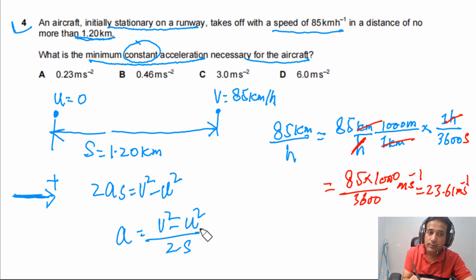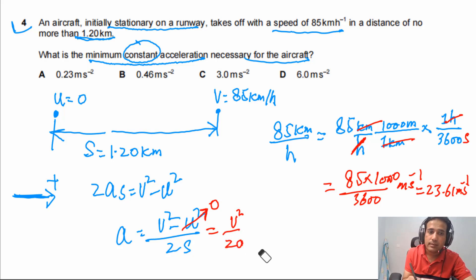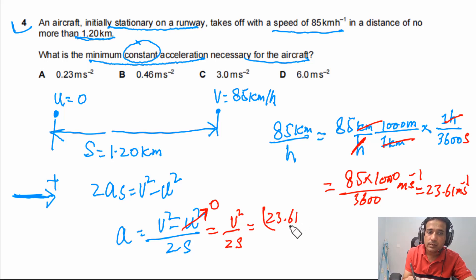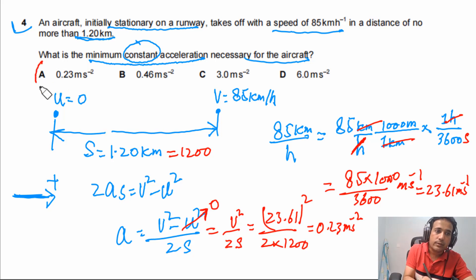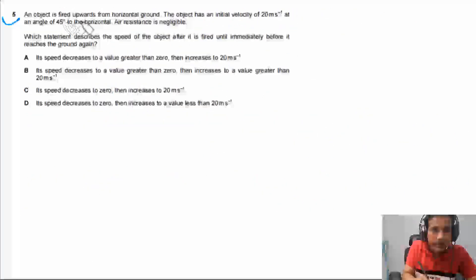Now substituting into a = v² / 2s: v = 23.61 m/s and s = 1200 meters. So a = (23.61)² / (2 × 1200), which gives 0.23 meters per second squared. The answer for this question is A.